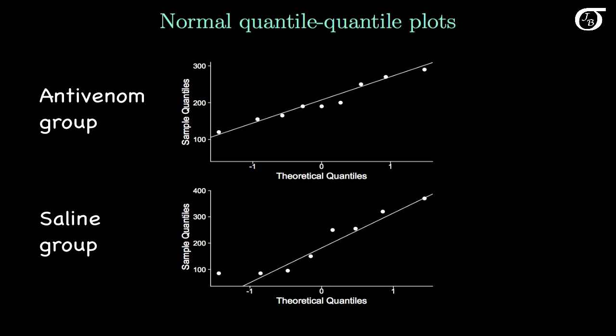The Welch t-procedures assume normally distributed populations, and we should always investigate that assumption. It's especially important here since we have these small sample sizes of 9 and 8.